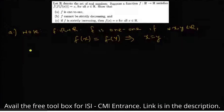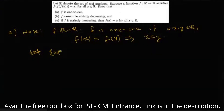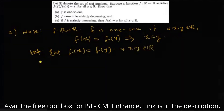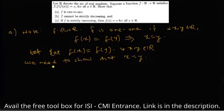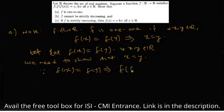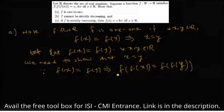Let F(x) = F(y) for every x, y belonging to the real numbers. We need to show that x = y. Since F(x) = F(y) implies that F(F(x)) = F(F(y)), because F(x) is a real number.